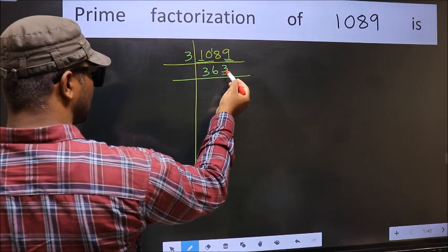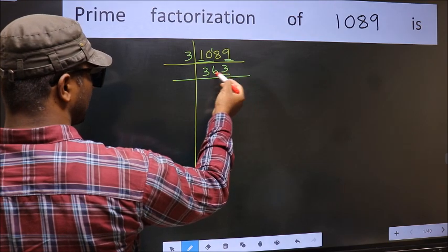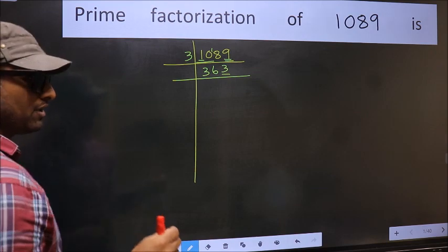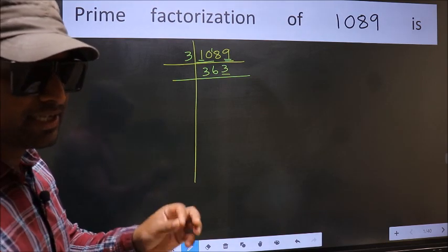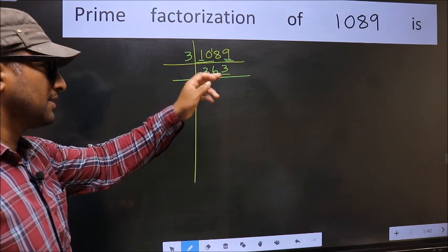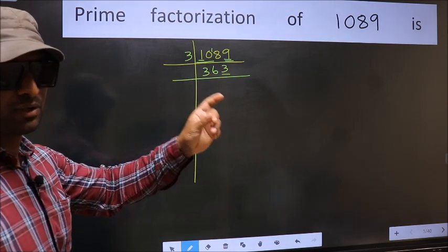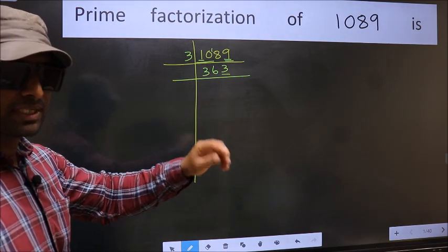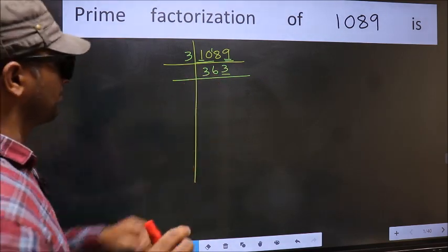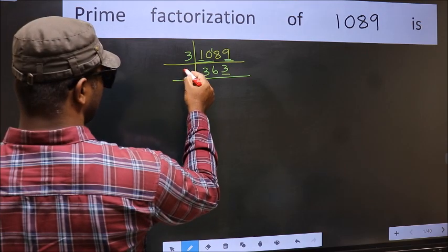Now here, last digit 3, not even, so this is not divisible by 2. To check divisibility by 3, we should add the digits: 3 plus 6 plus 3 equals 12. Is 12 divisible by 3? Yes. So this number is also divisible by 3. So you take 3 here.